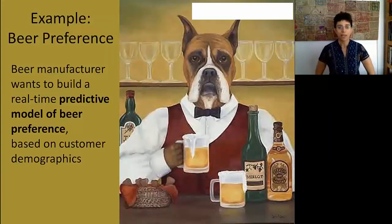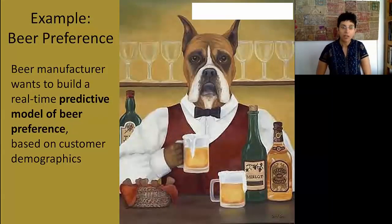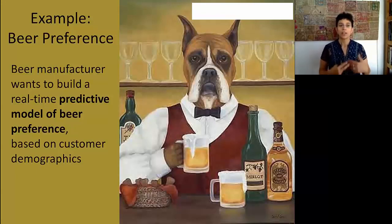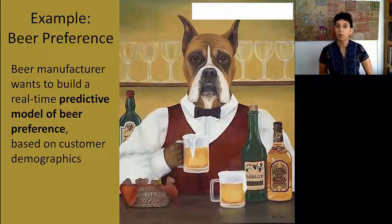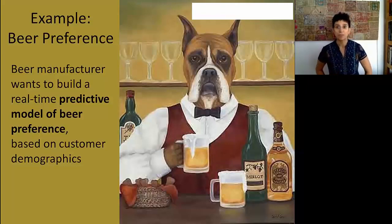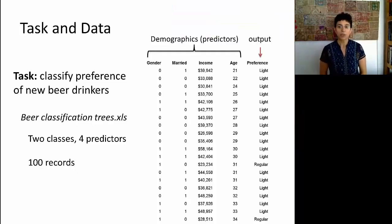Let's look at an example where we're looking at beer preference, and we have a beer manufacturer who wants to build a real-time predictive model for beer preference. He's going to use the customer demographics in order to serve the right beer. So think of an automated bartender where you walk into the bar, and based on your demographics, say your gender and your age group, you're going to be served a certain beer, and hopefully this is going to be indeed the beer that you prefer.